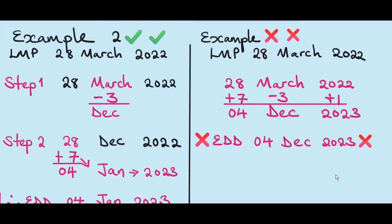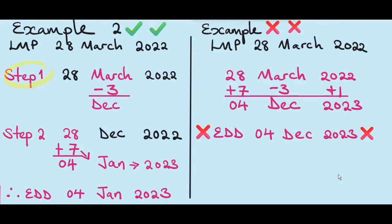In this next example, I want to emphasize that when calculating EDD using Naegele's rule, it's important to go step by step. Step 1: subtract 3 from the month. Step 2: add 7 to the day. You do not do everything at once. So with LMP 28th March 2022, step 1 subtracts 3 from March, which gives us December. Step 2: add 7 to the 28th, which gives us 4. You must be wondering how we ended up in January — once you added 7 to the 28th, you tipped into the next month. December ends with the 31st, so the next days tip into January. And 9 months added to March tips into next year, so we have 2023. Our EDD becomes 4th January 2023.